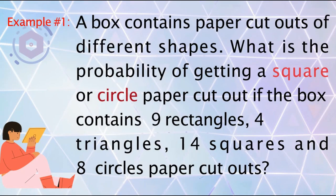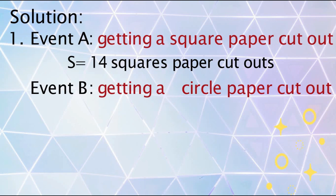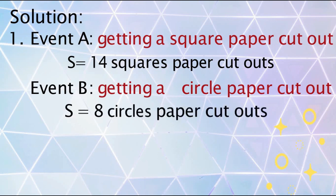Let us have an example. A box contains paper cutouts of different shapes. What is the probability of getting a square or circle paper cutout if the box contains 9 rectangles, 4 triangles, 14 squares, and 8 circles? To solve this problem, identify the two events: event A is getting a square paper cutout and event B is getting a circle paper cutout. The sample space for event A is 14 squares and for event B is 8 circles.